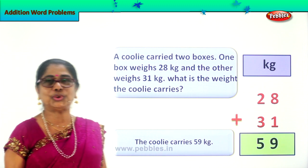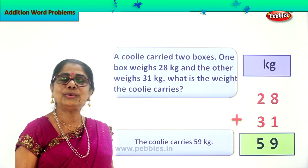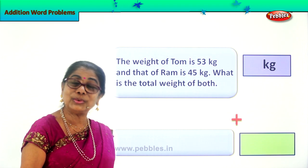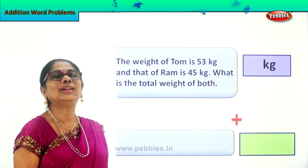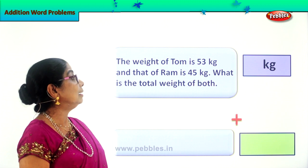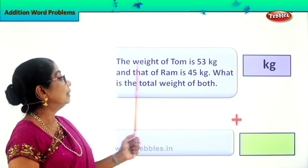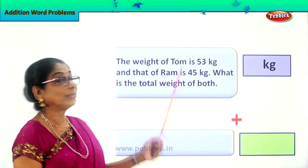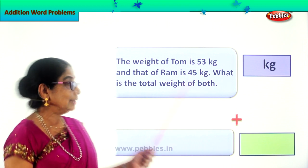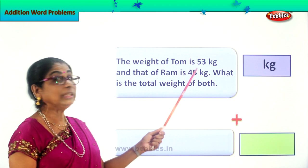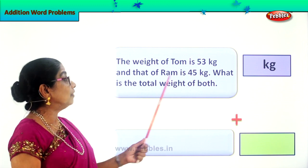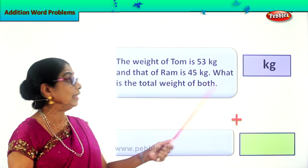I am sure you enjoyed. Do you want to look at another new sum? We read together, work together. Yes, word problem in addition. Look at the sum given to us. The weight of Tom — now you take your weight in your class, yes, weight and height. The weight of Tom is 53 kg and that of Ram is 45 kg.